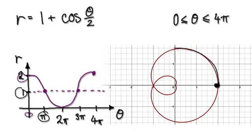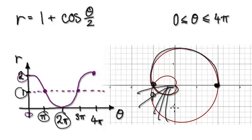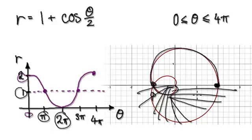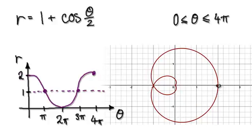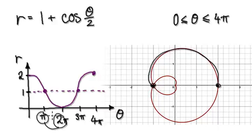So by the time it gets to pi, the radius is indeed 1. And then by the time it gets to 2 pi, the radius will be 0. So remember, 2 pi is all the way to here. What's happening is that from pi to 2 pi, the radius goes from 1 down to 0. So at this point here, the radius is 0.